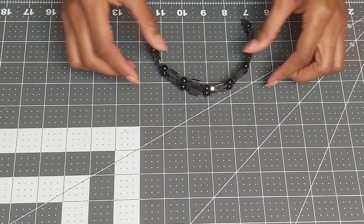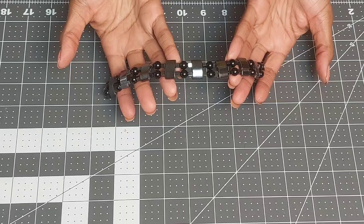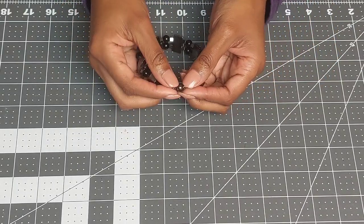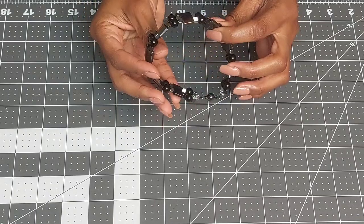Hey y'all, it's Shea Cherie. Welcome back to my channel. Today I am showing you how to make this double-stranded hematite bead bracelet and I'm also going to be doing a magnetic clasp closure. I'm going to show you the materials and we'll get started.